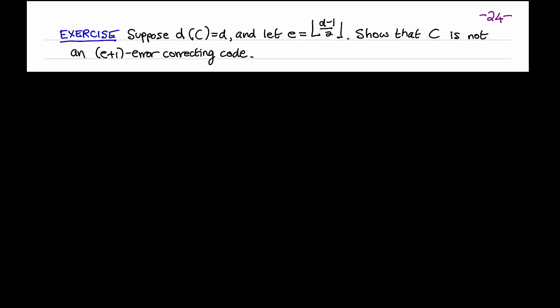Here's an exercise you can try. Suppose a code C has distance D, and let E be the floor of (D minus 1) over 2. Show that C is not an E plus 1 error-correcting code. This means that any code of distance D has error-correcting capability exactly E and no more.